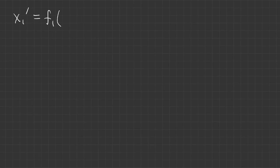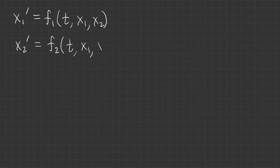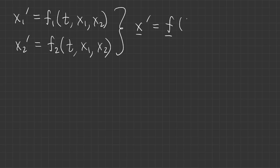These equations have the general form: X1 prime is a function of T, X1, and X2, and X2 prime is another function of T, X1, and X2. Using vector notation, we can summarize that as X prime equals F of T and X, where X and F are vector variables.